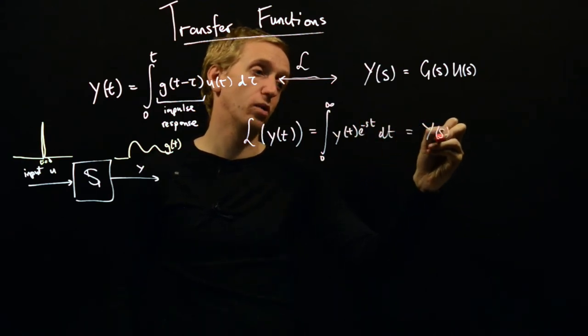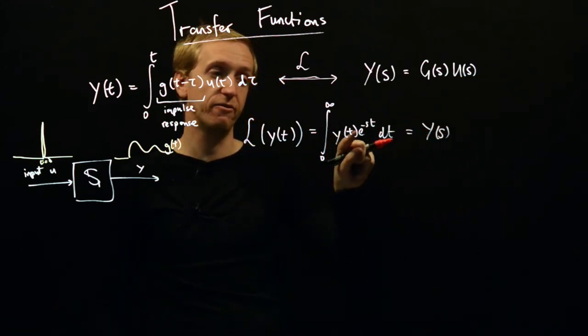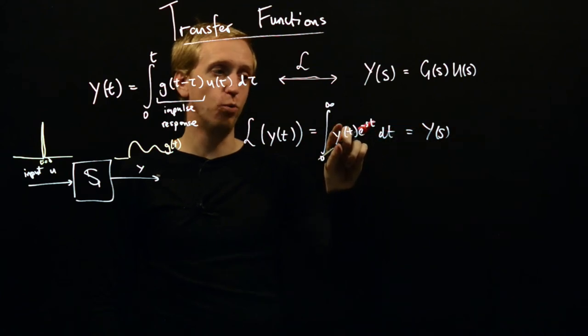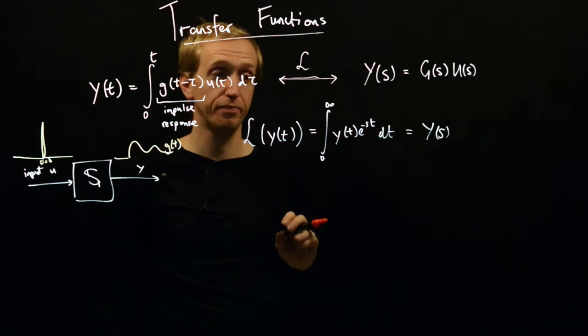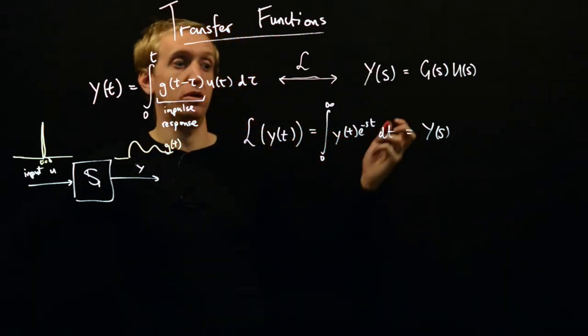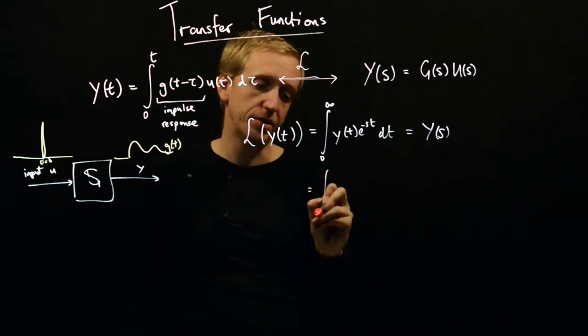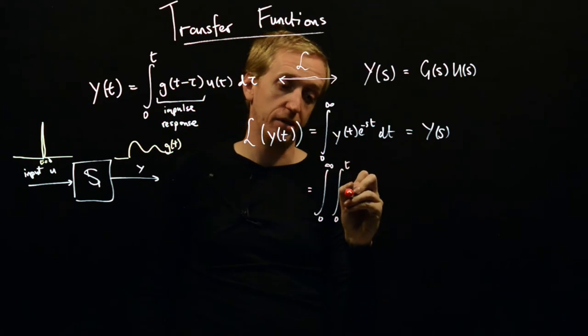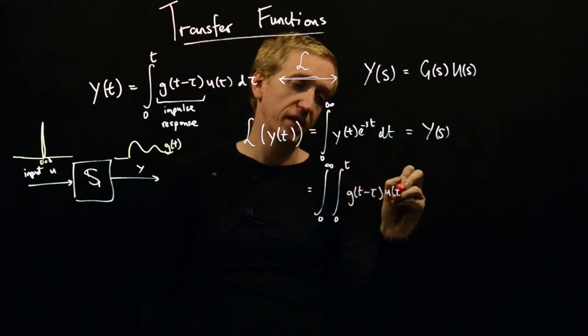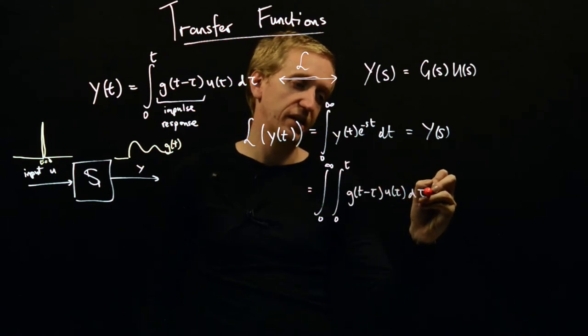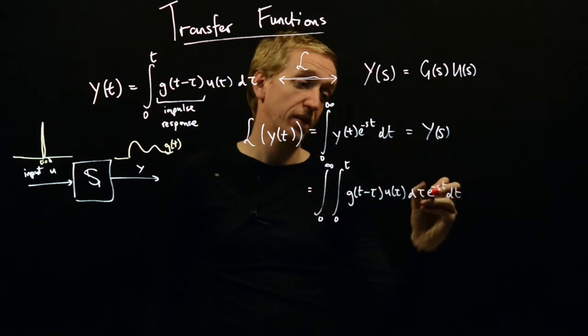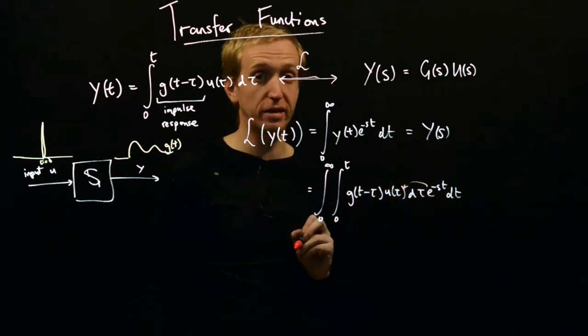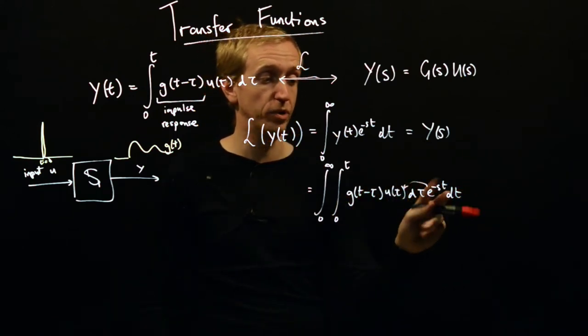Our convention was to call our transformed variables to replace the lowercase function of time with an uppercase variable with the same letter as a function of s. So, this is the Laplace transform of y is denoted by capital Y of s. And we know y of t is given by this convolution, so let's just substitute it in. We have, again, zero to infinity and now we have the integral from zero to t and y of t is just g of t minus tau u of tau and then we have d tau e to the minus st dt. This is just a constant with respect to this integral here, so we're free to pop this through here and then we'll reorder the integration.